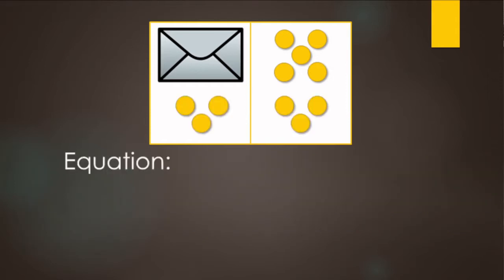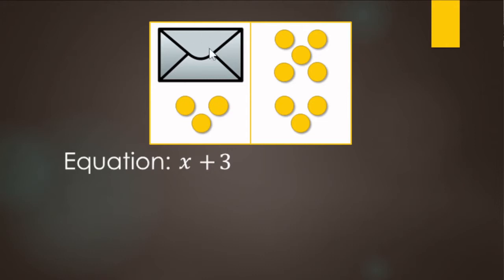If we did want to write an equation for this, that wouldn't be too tricky. We're going to start with x. Now, x is a variable — that goes with the envelope here, it's an unknown value. And then we're going to add these three dots, so this side is x plus 3. And that's going to equal this side, which is 8.